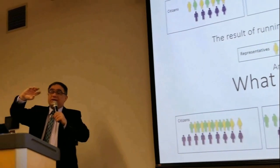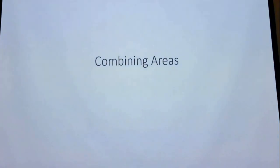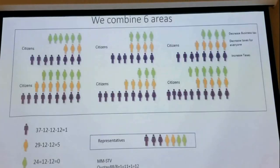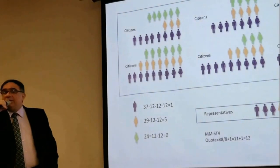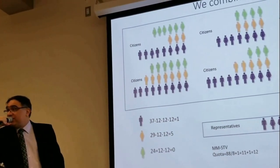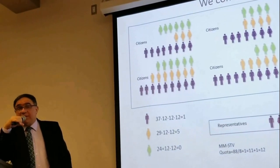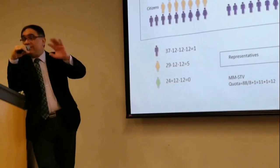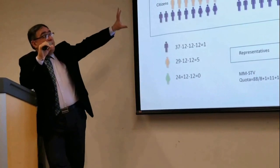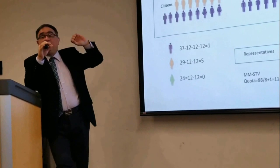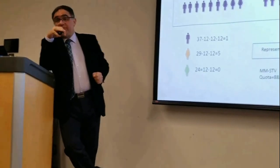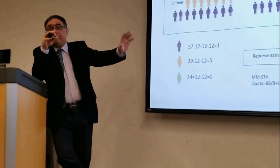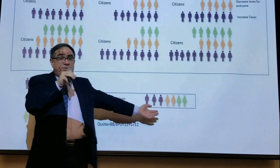The final solution happens when we combine areas. When we combine areas, something beautiful happens with Single Transferable Vote — specifically multi-member Single Transferable Vote (STV). Unfortunately, many people don't see the difference. If we combine six areas into one electoral district and elect, say, seven people to parliament — as is happening in British Columbia, where they're increasing the total number of MPs by about ten percent — then something beautiful happens.